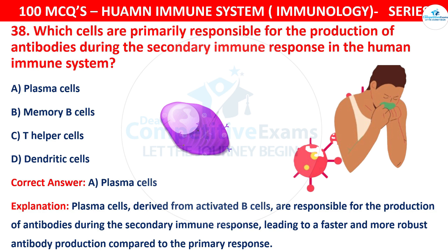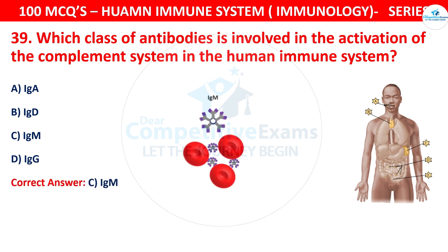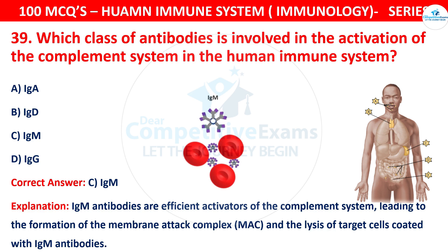Question 39: Which class of antibodies is involved in the activation of the complement system in the human immune system? The options are IgA, IgD, IgM, or IgG. The correct answer is C, that is IgM. IgM antibodies are efficient activators of the complement system, leading to the formation of the membrane attack complex (MAC) and the lysis of target cells coated with IgM antibodies.